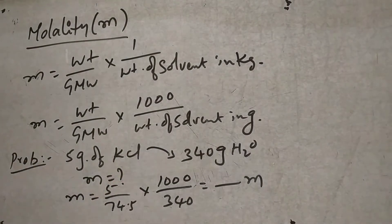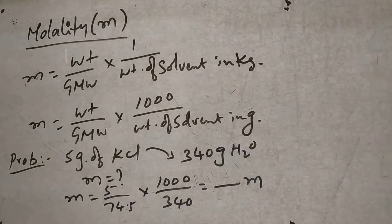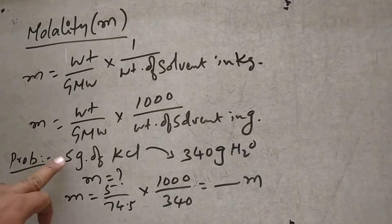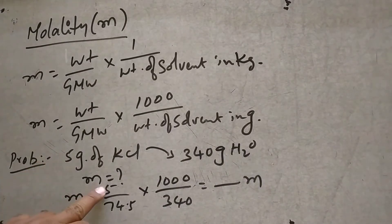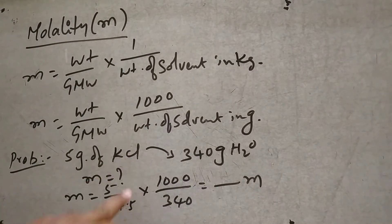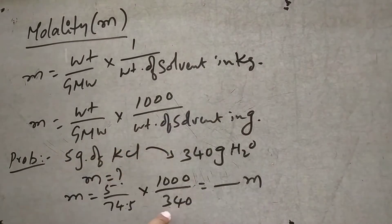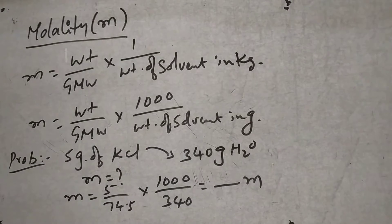You will get small m. So: 5 grams divided by gram molecular weight, into 1000 divided by 340 — where 340 is the weight of solvent in grams. That is the answer.